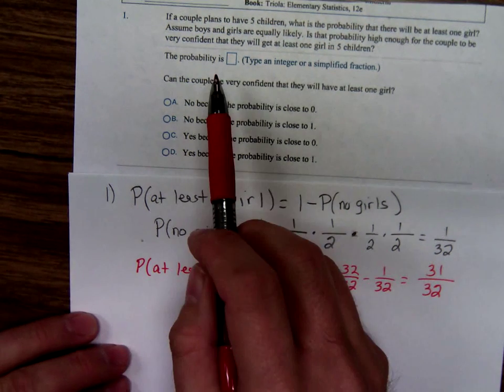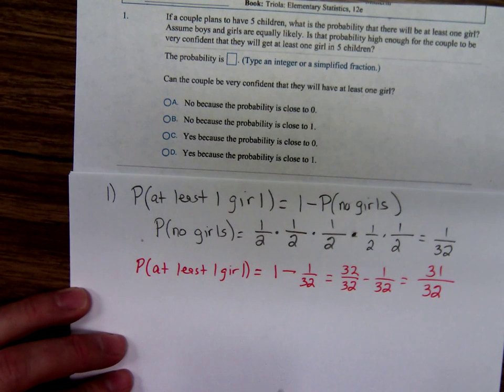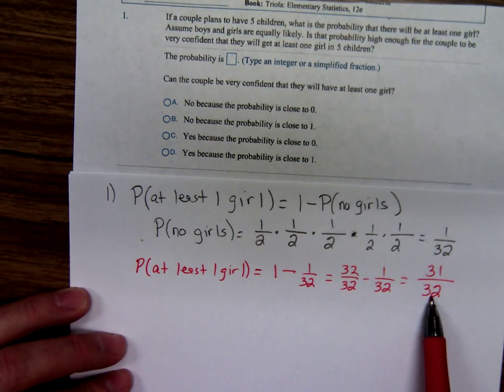So the answer to the first question, what's the probability of getting at least one girl? 31 over 32.